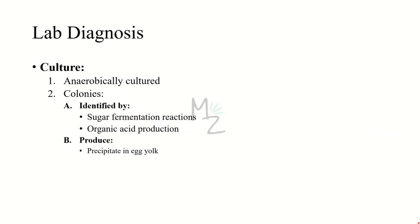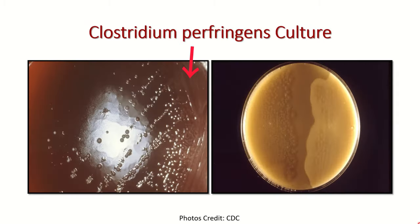Culture. This bacterium is cultured anaerobically and then identified by sugar fermentation reactions and organic acid production. Clostridium perfringens colonies exhibit a double zone of hemolysis on blood agar. The colonies also produce a precipitate in egg yolk agar caused by the action of lecithinase. Serologic tests are not useful. The left image shows the blood agar with colonies, and the right shows the egg yolk agar with the precipitate produced by Clostridium perfringens.